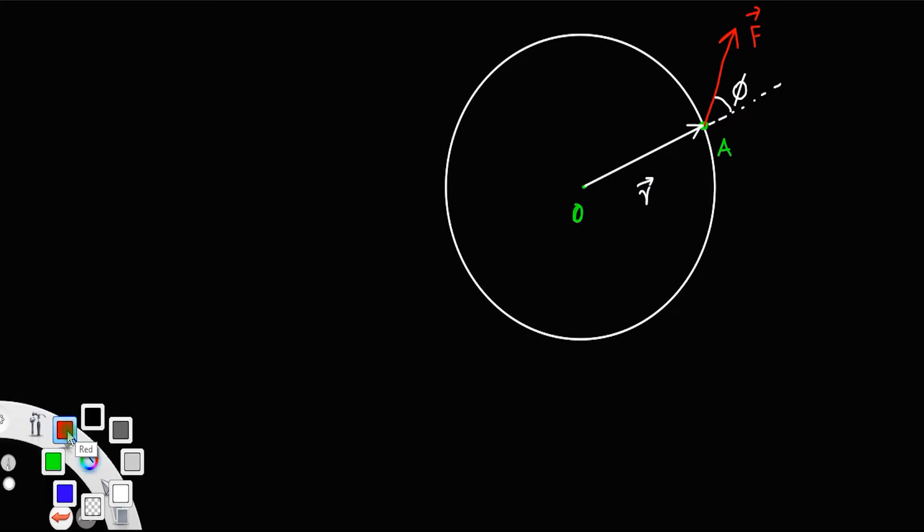This force can be resolved into one along the horizontal direction. Let us call this as Fx, where Fx equals F cos phi. And let us call the perpendicular component as Fy, where Fy equals F sin phi. These are the two components of this force F.